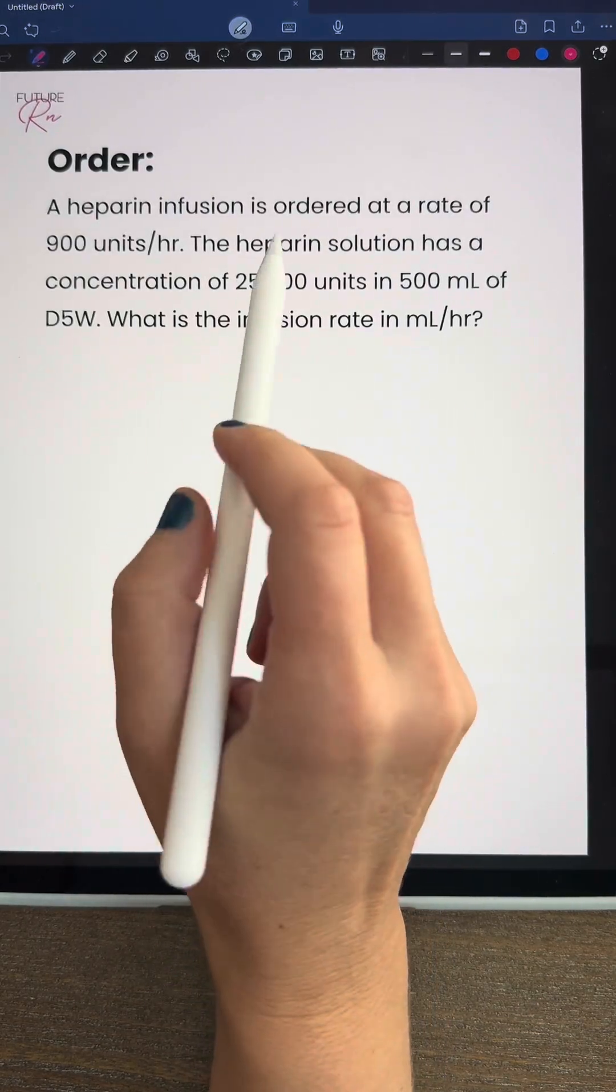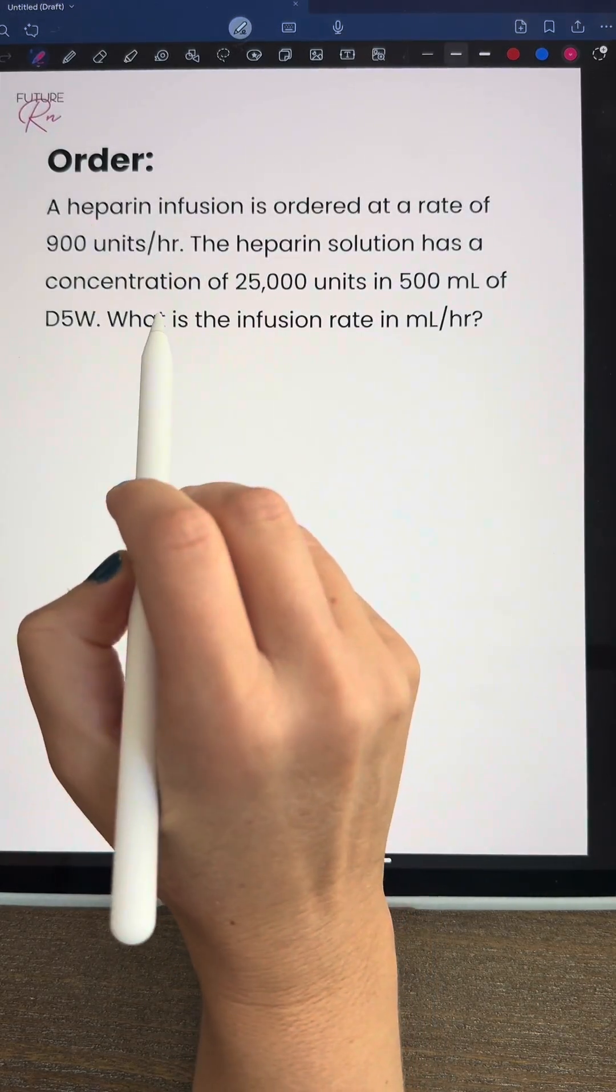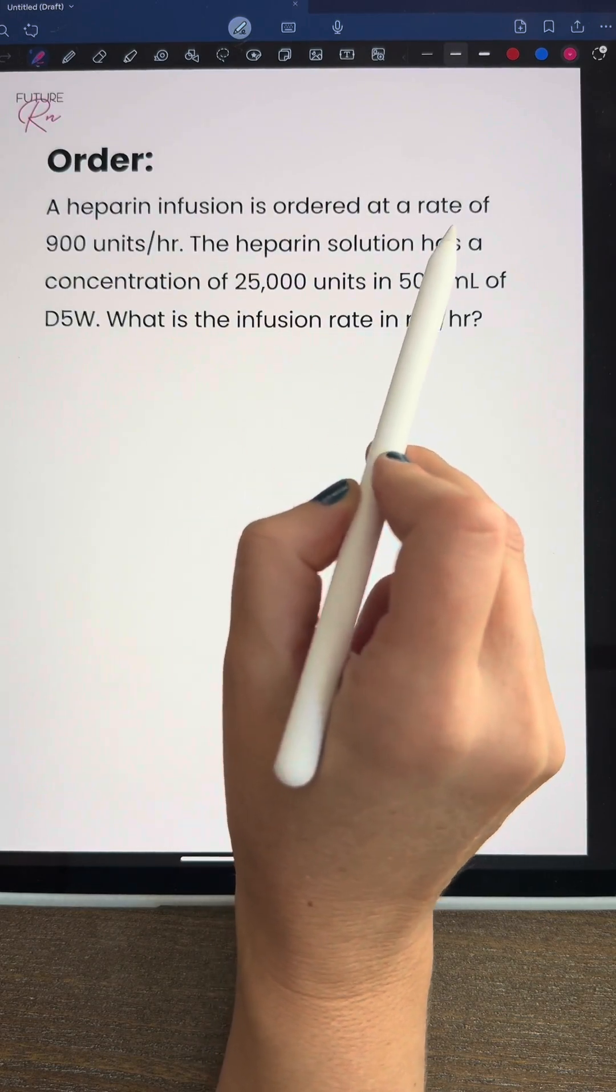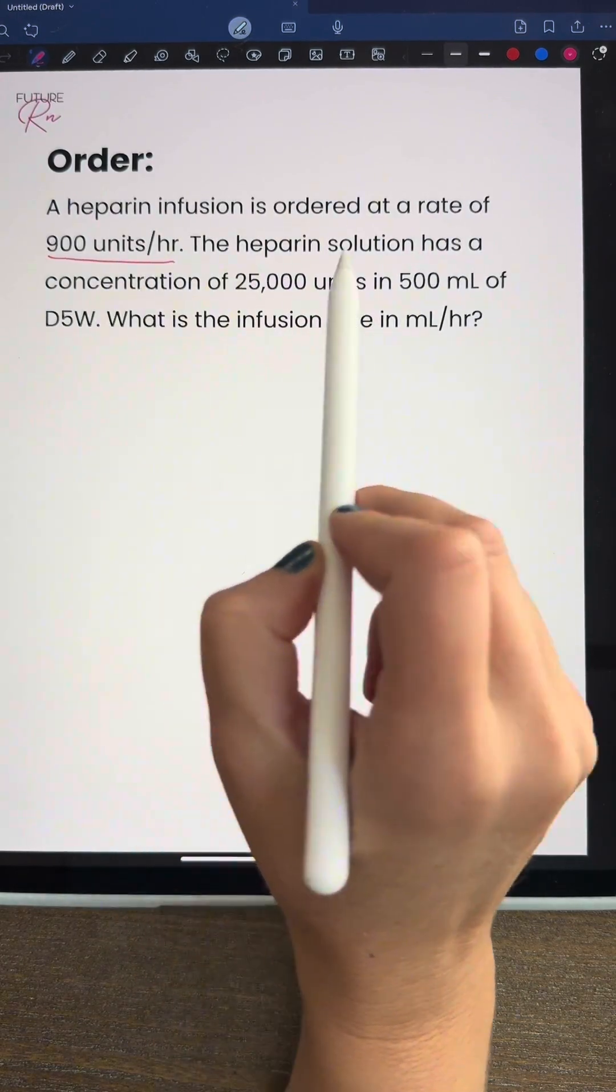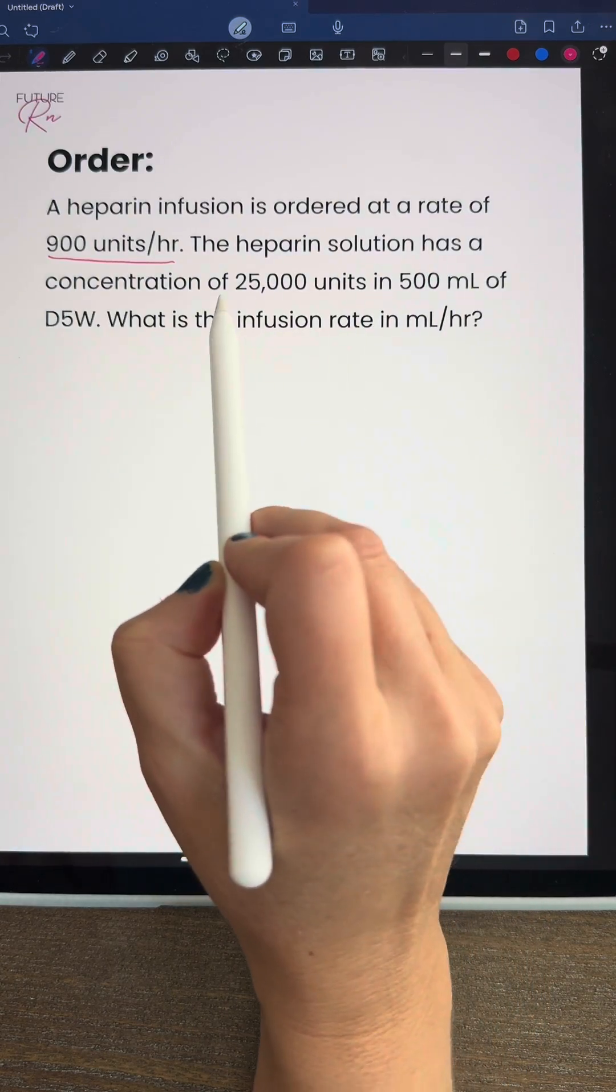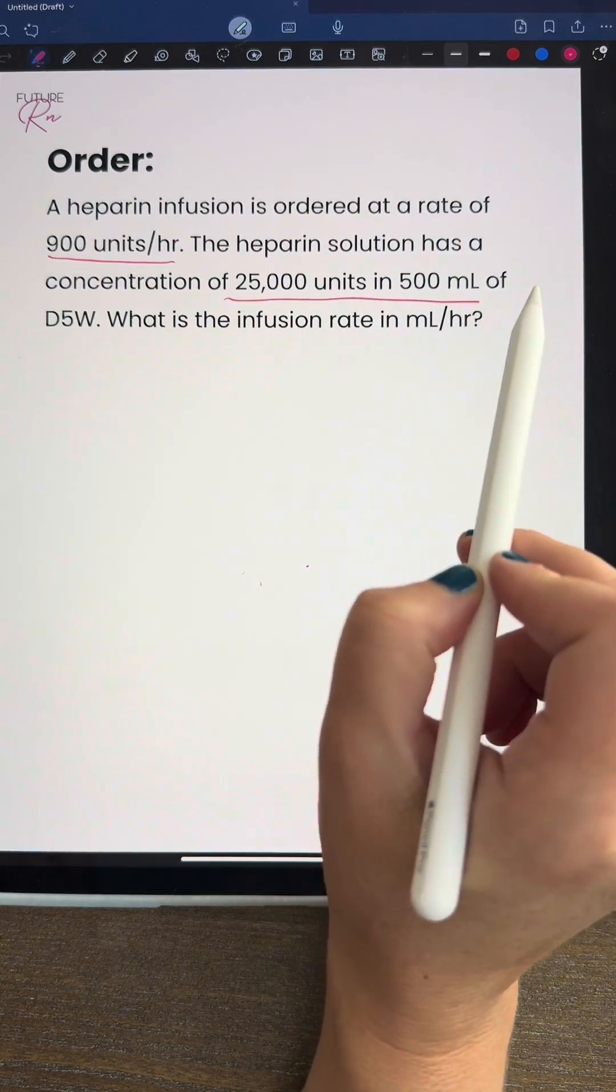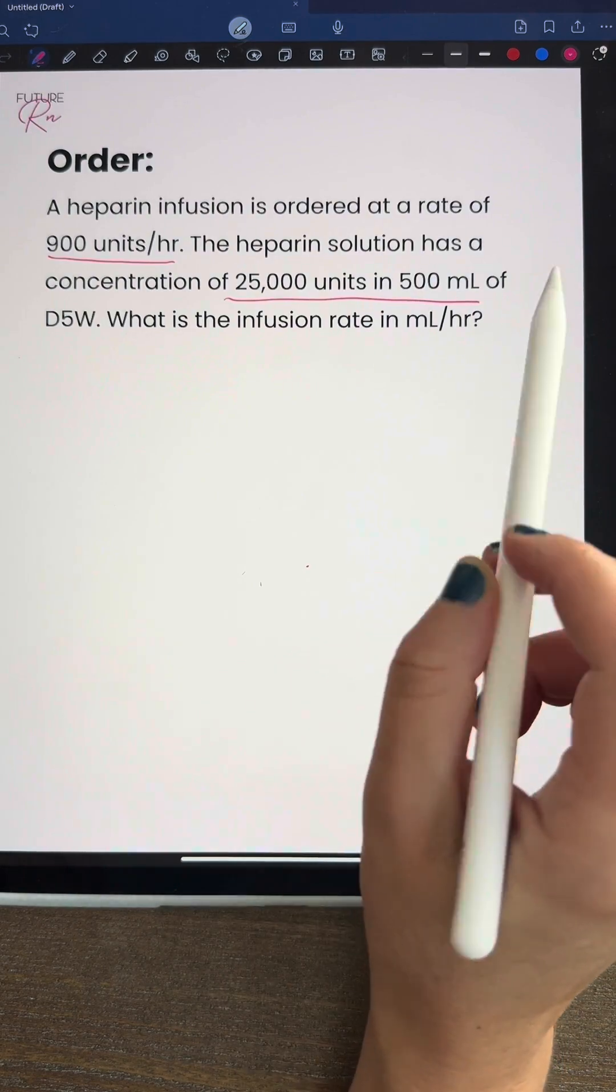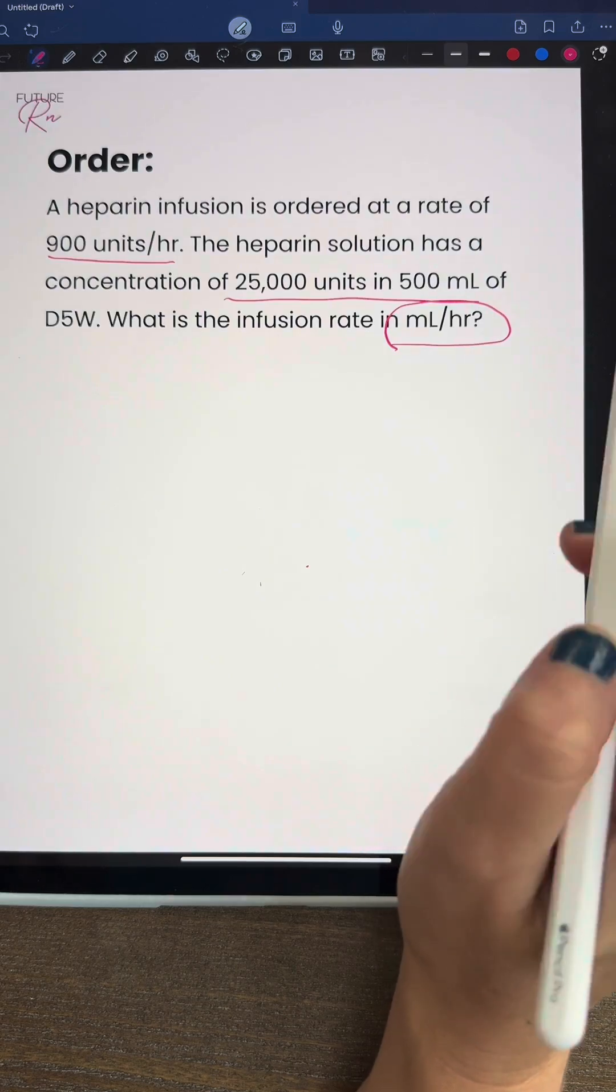Hey future nurses, let's do this dosage calculation for heparin using dimensional analysis. We have a heparin infusion ordered at a rate of 900 units per hour. The heparin solution has a concentration of 25,000 units in 500 milliliters of D5W. What is the infusion rate in milliliters per hour?